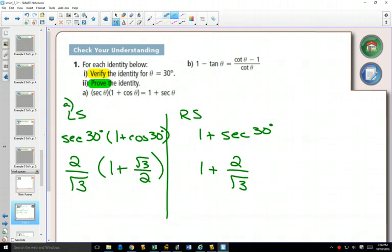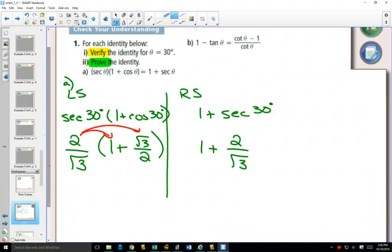Well, here we could distribute, right? And so if you distribute, what are you going to get? Well, 2 over root 3 times 1 will just be 2 over root 3. And what happens when you multiply 2 over root 3 times root 3 over 2? The 2s would cancel, the root 3s would cancel, and you would just get plus 1. Are they the same? Yes, so now we can say the left side is equal to the right side. That's what verifying looks like.